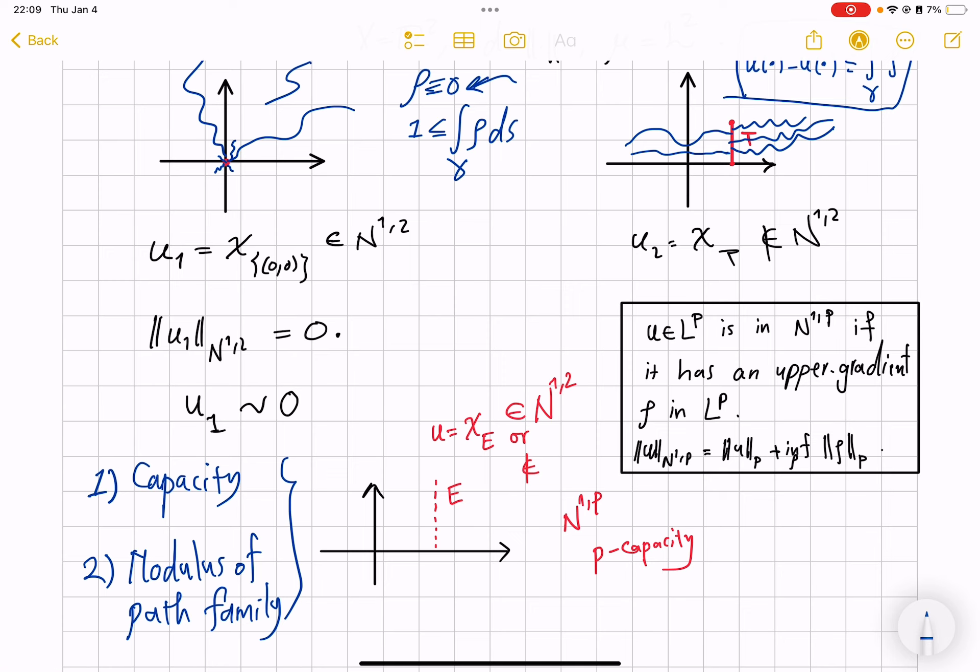So both of these notions, let me emphasize, that depend on this exponential p that is very important. We know how in the classical world of Sobolev functions, W^{1,p} functions have very different behaviors for different p's.